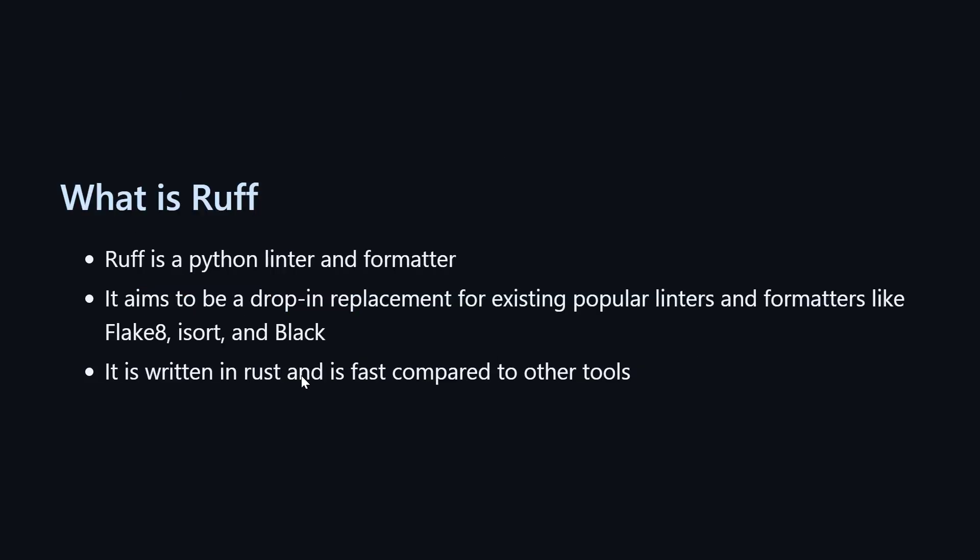Ruff is a Python linter and formatter. There are already popular linters and formatters like flake8, isort, and black. Ruff aims to be a drop-in replacement for flake8, isort, and black. And since it is written in Rust, it's very fast compared to existing tools.